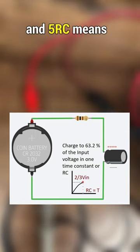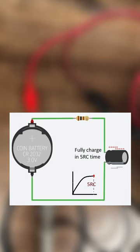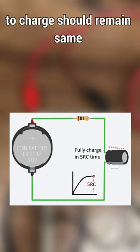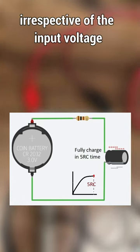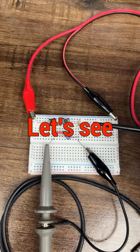And 5 times RC means the capacitor is fully charged now. So, the time it takes for this capacitor to charge should remain same irrespective of the input voltage. Right? Let's see.